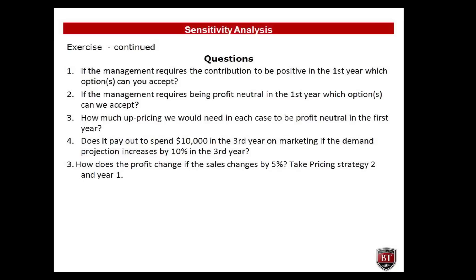The exercise questions are: One — if management requires the contribution to be positive in the first year, which options can you accept? Two — if management requires being profit neutral in the first year, which options can we accept? Three — how much up-pricing will we need in each case to be profit neutral in the first year? Four — does it pay out to spend $10,000 in the third year on marketing if demand projection increases by 10% in the third year? Five — how does the profit change if sales changes by 5%? Take pricing strategy two and year one.